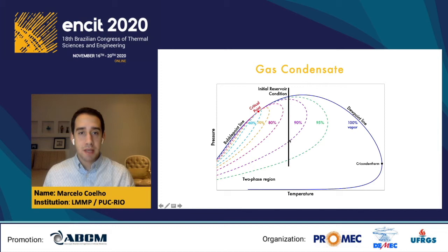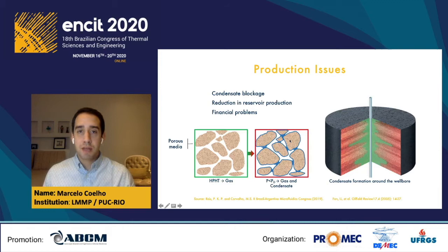Because of that, we are going to have some production issues. We can see here in this image that the green part is the condensate that accumulates near the wellbore, and it can cause condensate blockage because this region is the area of the reservoir with the lowest pressure. This will reduce production in the reservoir and can lead to financial problems.